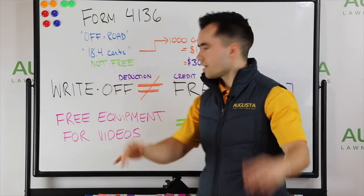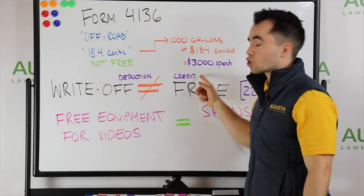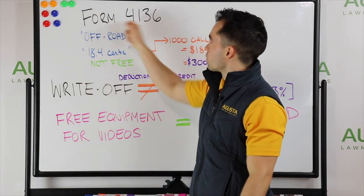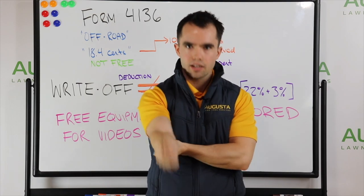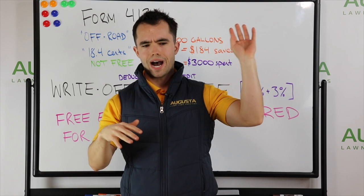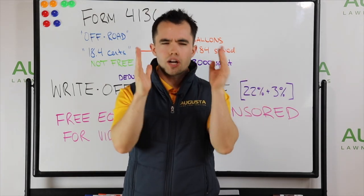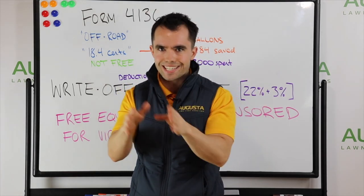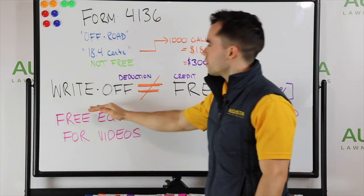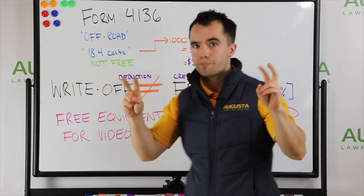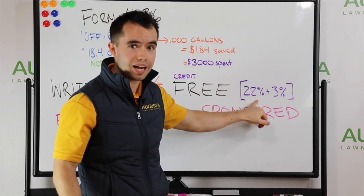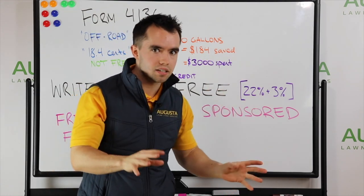When someone says you get a deduction, that's a write-off. When someone says credit, that means I'm actually going to get money from the government. That's what Form 4136 is, a credit. They give you money back. It's very important. When people say, oh, it's a write-off, just buy it, if you're not making money in your long-term business and you're doing things in the name of write-offs, you are absolutely doing it incorrectly. Do not think that if you can write something off as a business expense, it is free.